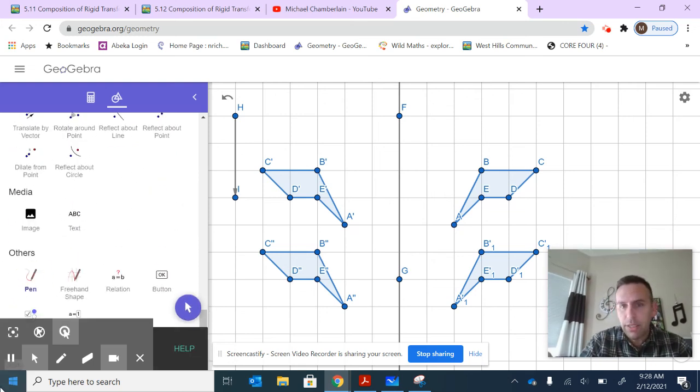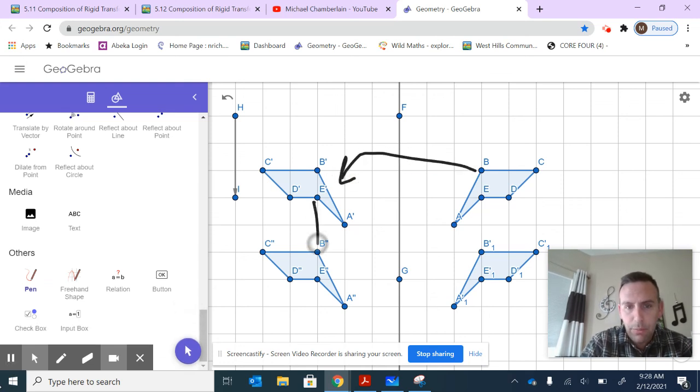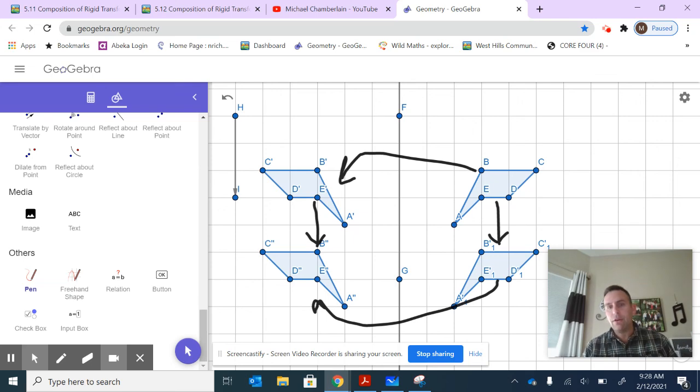What I'm pointing out is if you do the reflection first and then move it down, it's the same as first moving it down and then doing the reflection to that final resting spot. It just has to be parallel to the line of reflection.